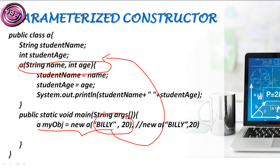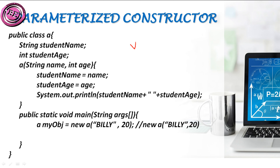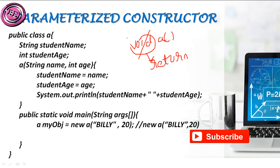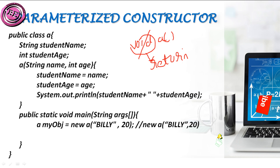So what is the difference between a method and a constructor? When we are getting the student name and student age, they are not transferred to any other method. When data is transferred to another method, that statement becomes a method. We didn't call any return statement here. A constructor doesn't support a return type. If I construct something using 'void a()' that means void is a return type — so we didn't create a constructor but a method. When initializing a constructor we must not use any void type, because void indicates a return type. When constructing a constructor we must use only the particular class name.